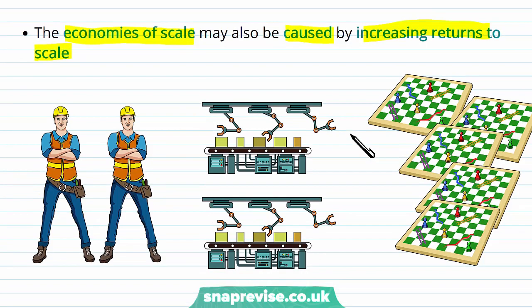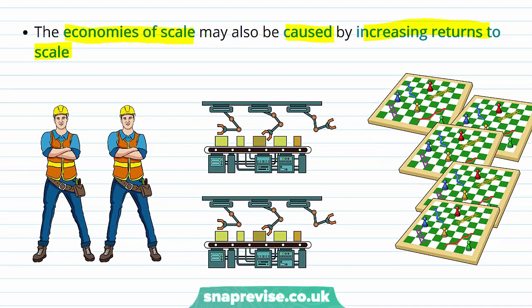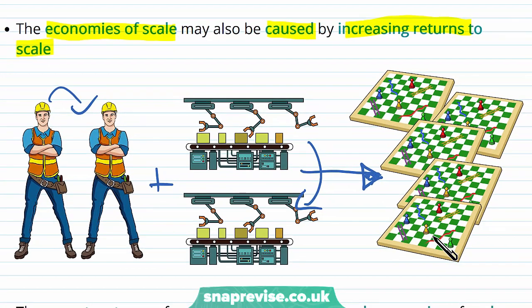Increasing returns to scale is when we say double our inputs—say we went from one worker to two workers and we went from one machine to two machines—and the resulting factor is that we have more than doubled our outputs. So we've basically doubled our inputs and we've got more than double out of what we were expecting.